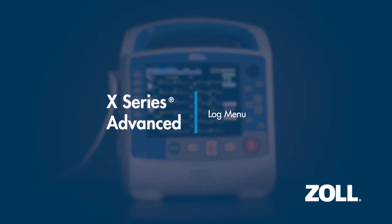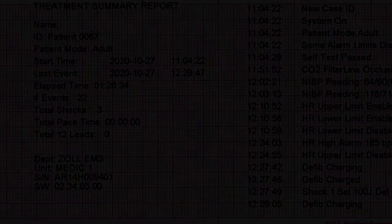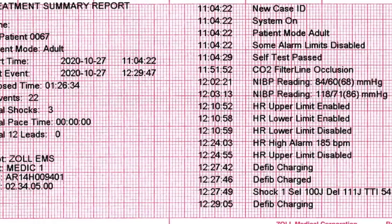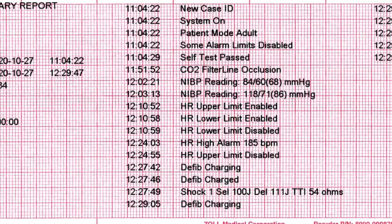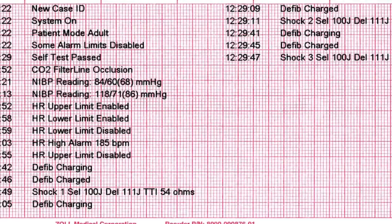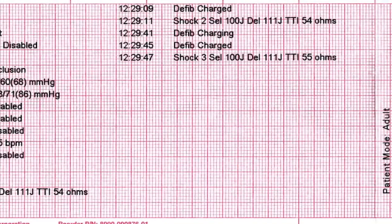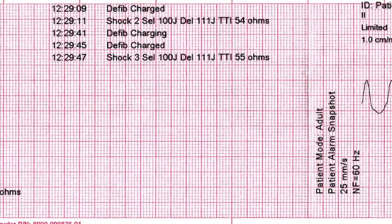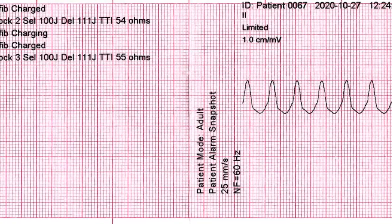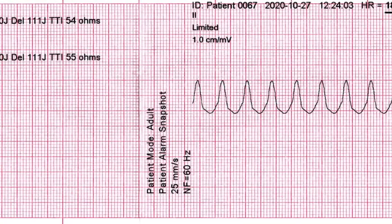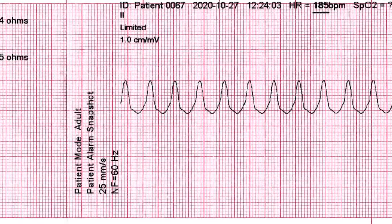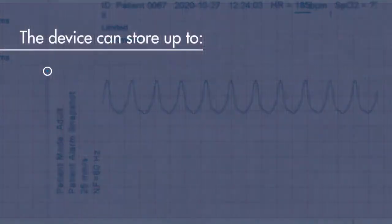The Log Menu provides access to the X-Series Advanced full disclosure case log, which continuously stores information during a case. The device can maintain up to 150 separate full disclosure cases that contain treatment events, trends, ECG and continuous waveforms, monitoring and event snapshots, and 12-lead snapshots and analysis. It can concurrently store up to the following events.